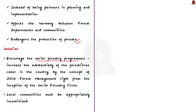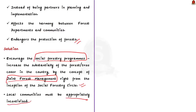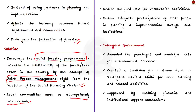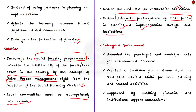This affects the harmony between the forest department and village communities, thereby endangering forest protection. The first solution is encouraging the social forestry program to increase tree cover sustainably, stressing the concept of joint forest management and appropriately incentivizing local communities. The second solution is ensuring the flow of funds for restoration activities. The third and most important solution is ensuring adequate participation of local people in planning and implementation through local institutions. For all this to happen, the government needs to revisit existing legal and policy mechanisms regarding forest conservation.